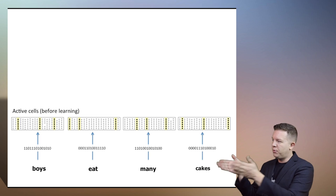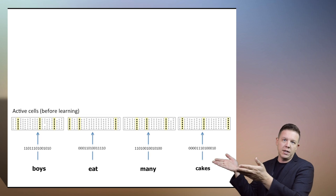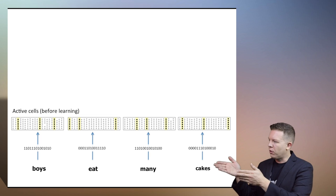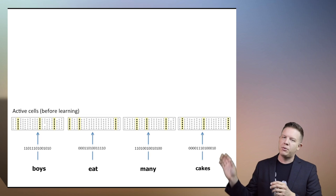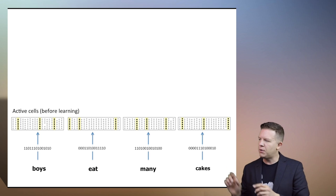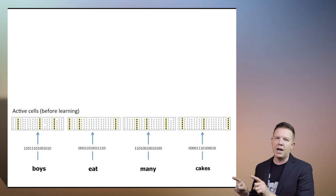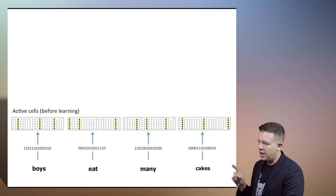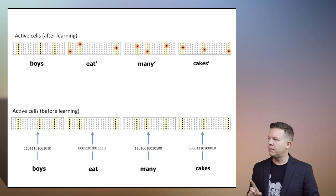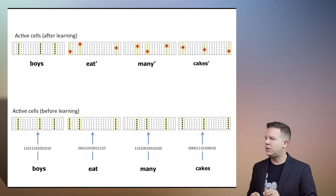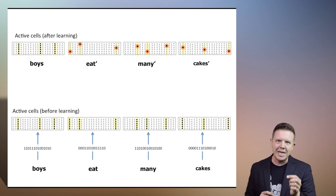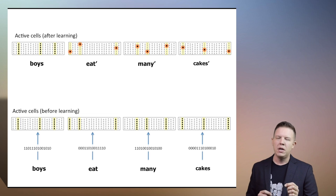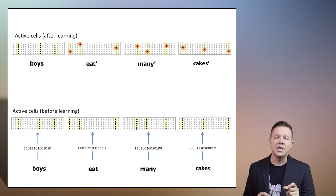And the spatial pooler is assigning them active columns. So before learning, the spatial pooler is going to represent these four elements in the sequence with these active columns.